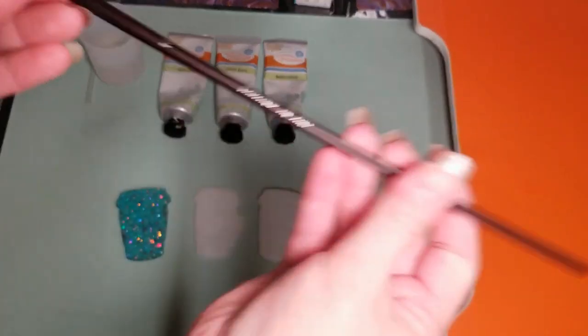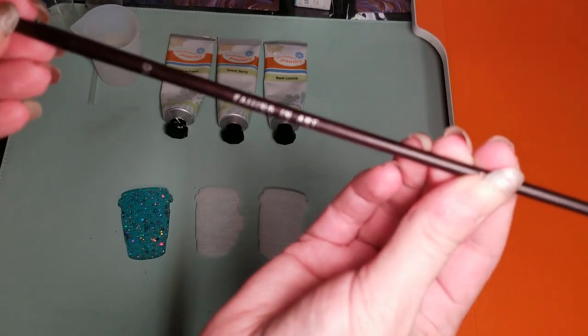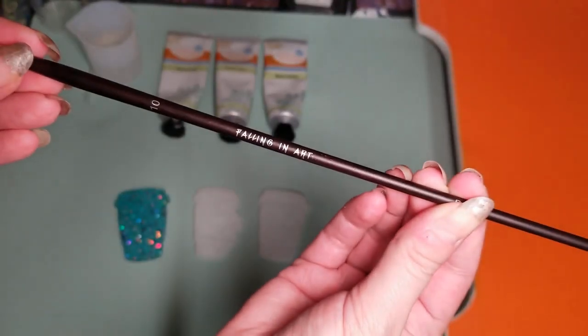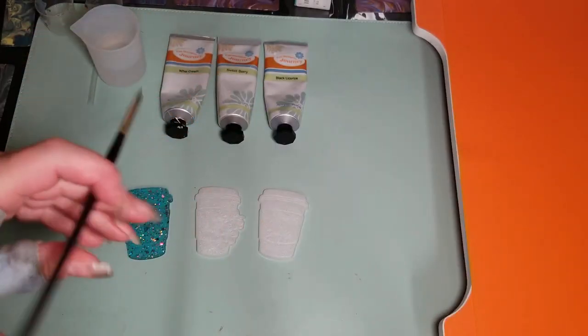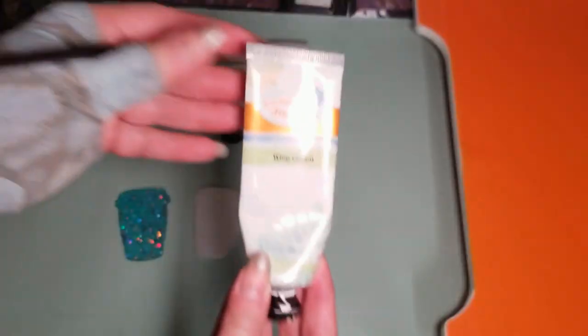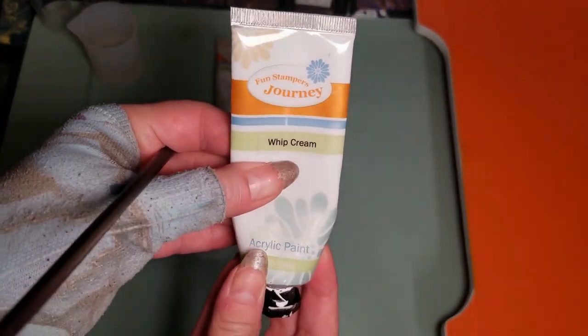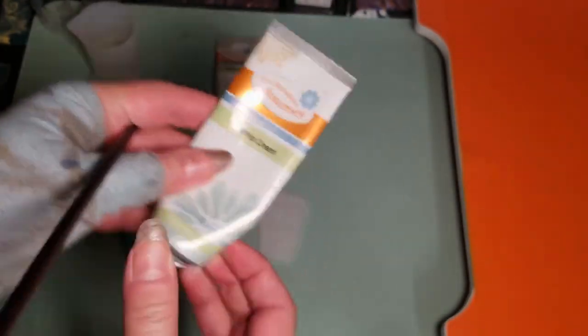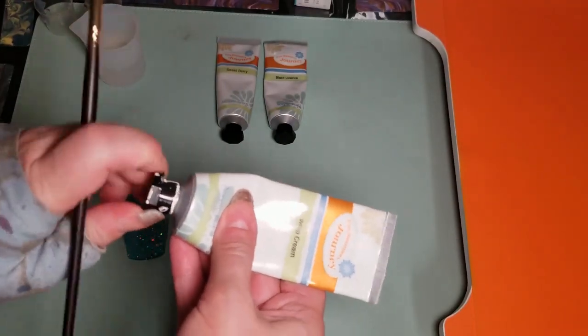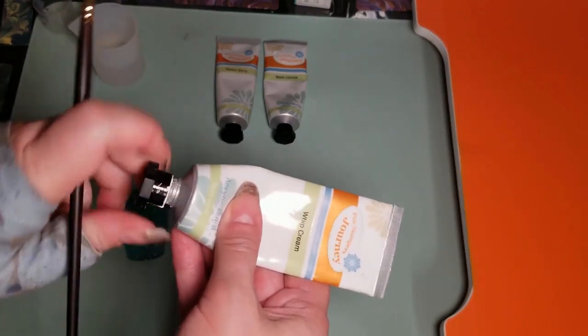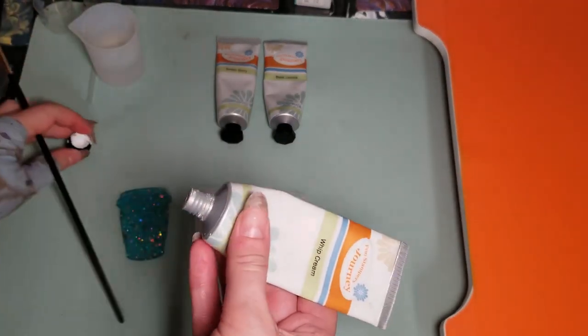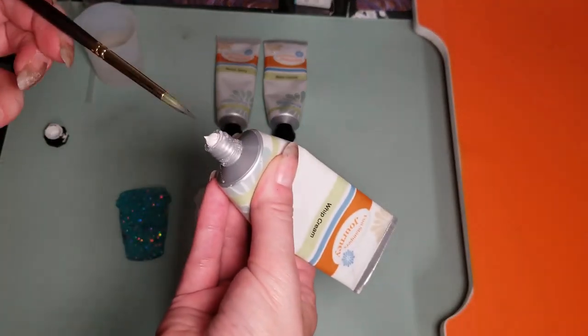Today we're going to take these resin pieces that I made and these falling in art paintbrushes and some acrylic paint from Spellbinders Paper Arts. This is called whipped cream and we're going to use the paint to fill in the edges, the etchings of some resin pieces that I made.